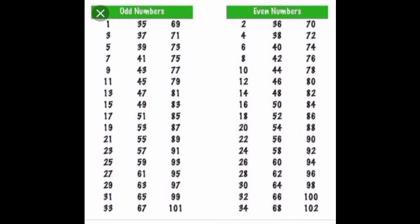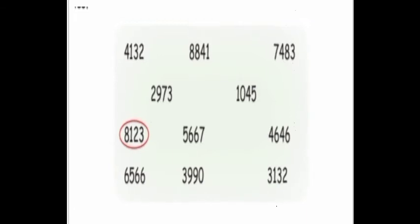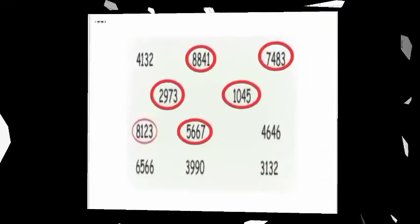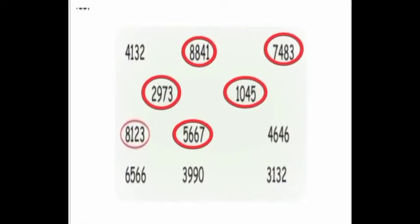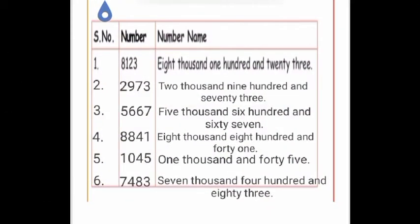Here are some odd and even numbers for you. Let's go to the sum. Circle the odd numbers and write their names in the following box. Already, one odd number is done for you. Circle the odd numbers and write them in the given box, then write the number name of each odd number.